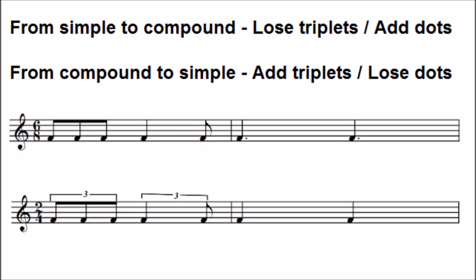That is because in simple time, the beats are simple crotchets, they don't have dots. But in compound time, the beats are dotted crotchets, groups of three quavers.